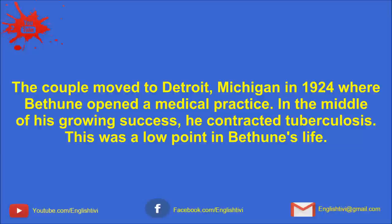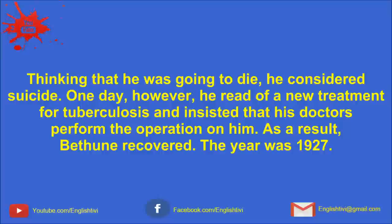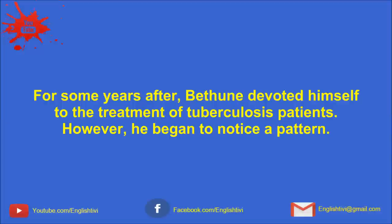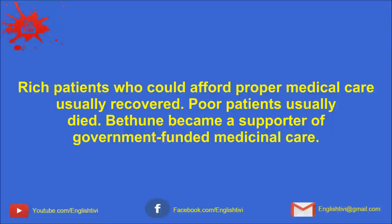This was a low point in Bethune's life. Thinking that he was going to die, he considered suicide. One day, however, he read of a new treatment for tuberculosis and insisted that his doctors perform the operation on him. As a result, Bethune recovered. The year was 1927. For some years after, Bethune devoted himself to the treatment of tuberculosis patients. However, he began to notice a pattern. Rich patients who could afford proper medical care usually recovered. Poor patients usually died.